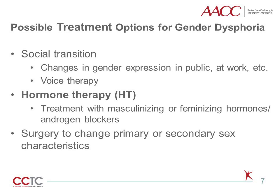There are three major categories of treatment options for gender dysphoria. First, individuals may pursue a social transition, which might include name changes, voice therapy, or other changes in gender expression in public or at work. A second option is hormone therapy, with either masculinizing or feminizing hormones. Lastly, surgery is possible to change primary or secondary sex characteristics. Therapy is very personalized to the individual's goals, and individuals may choose to pursue one or more of these options to different extents. Monitoring hormone therapy is where the laboratory most commonly gets involved.